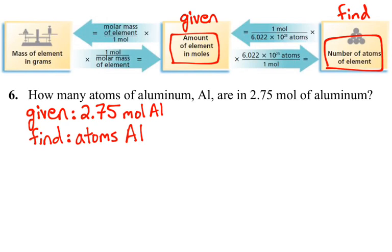So what we will do first, as we tend to always do in this type of problem, is we will take what we are given and write it in fractional form. So we are given moles of aluminum. So that is 2.75 moles of aluminum over 1 to make it a fraction here.